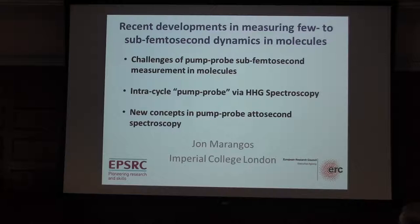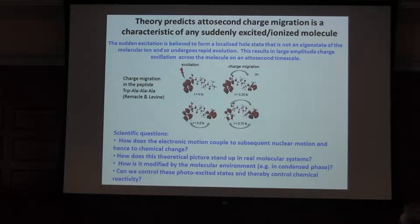One of the challenges is to measure and understand this very intriguing process called charge migration. The idea is that if you suddenly photo-ionize in a valence state, in a larger molecule, you will create a localized hole state that's not an eigenstate but a cation. It will move around within the cation on rapid timescales, sub-femtosecond timescales, and that will result in a large amplitude charge oscillation.